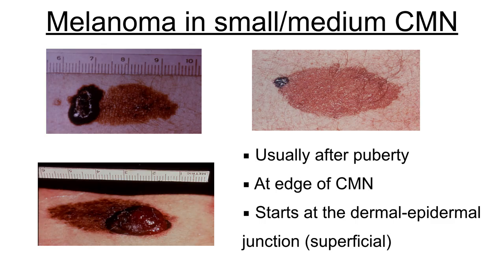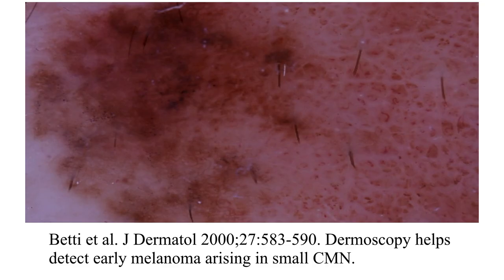When melanoma does occur — which is rare in small and medium congenital nevi — it almost always occurs after puberty. It frequently arises at the edge of the congenital nevus and starts at the dermoepidermal junction, arising as a very superficial melanoma. This is very different from large and giant congenital nevi. What this suggests is that dermoscopy is the perfect tool for identifying early melanomas arising in small congenital nevi. Thank you for your attention.